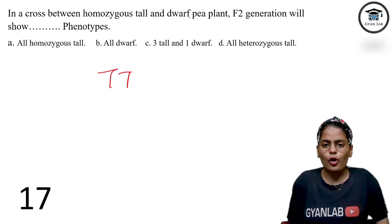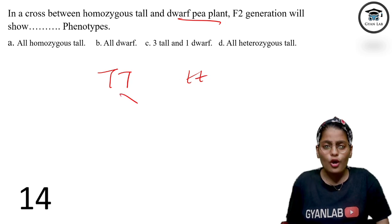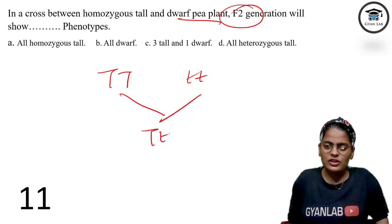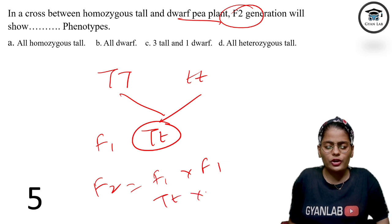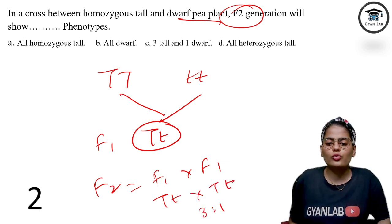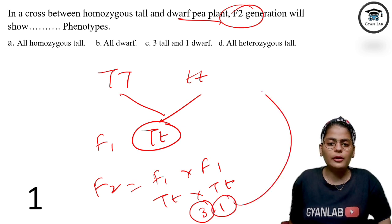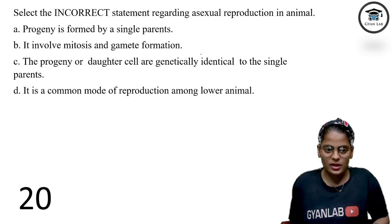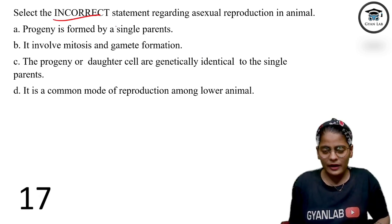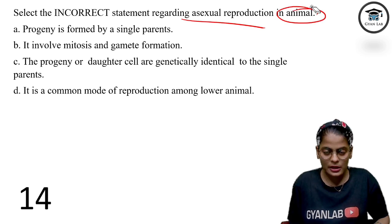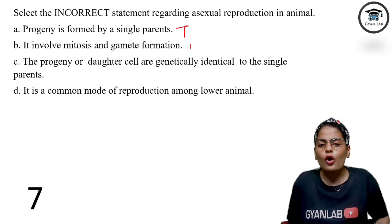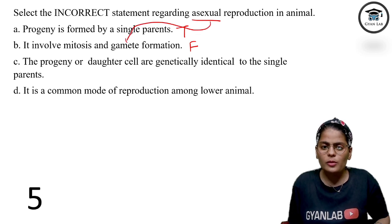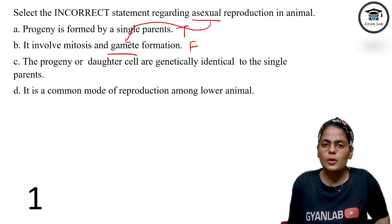If you cross a homozygous tall plant (TT) with a dwarf pea plant (tt), the F1 generation will be hybrid (Tt). The F2 generation from F1 × F1 = Tt × Tt gives the ratio 3:1 — 3 plants will be tall and 1 will be dwarf. Answer is option C. Next: find the incorrect pair regarding asexual reproduction. Progeny formed by a single parent — true. Gamete formation — this is false because asexual reproduction means no gamete formation. Option number B is the false statement.